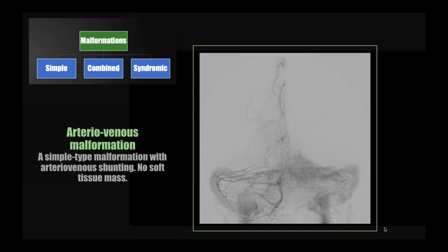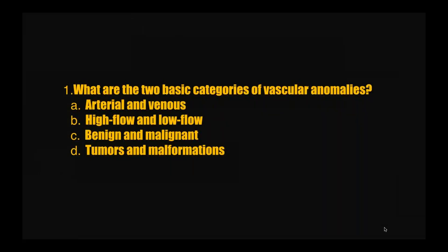The right-sided dural venous sinuses show up as they normally should after blood goes through the capillary bed. What are the two basic categories of vascular anomalies? People talk about high flow and low flow, benign and malignant, arterial and venous — but the very basic first categorization is tumors and malformations. Tumors involve a soft tissue mass. Malformations just involve abnormal vessels.